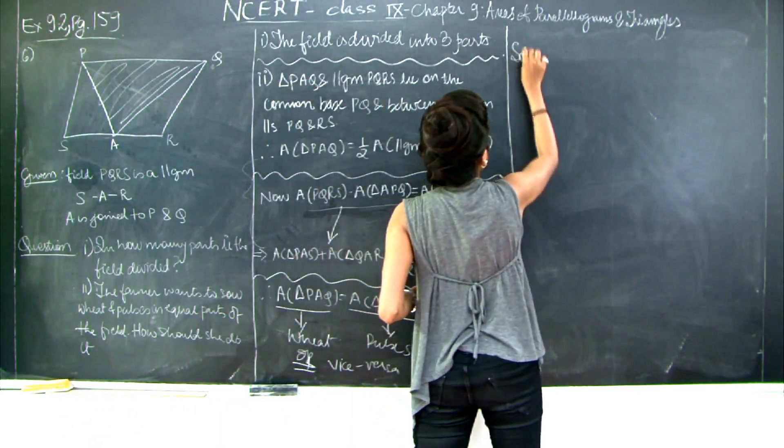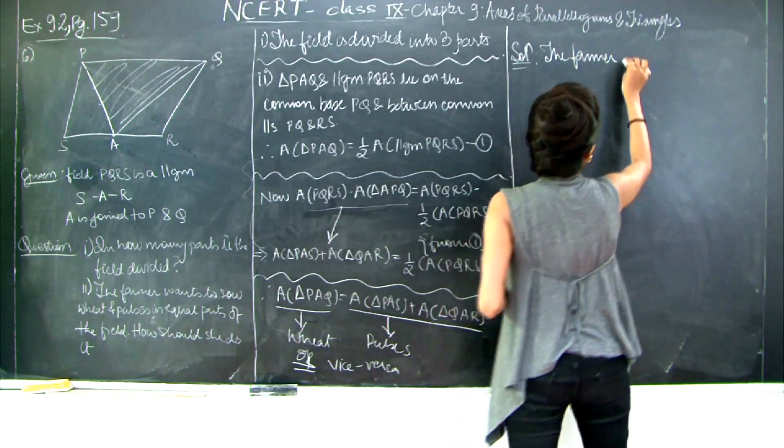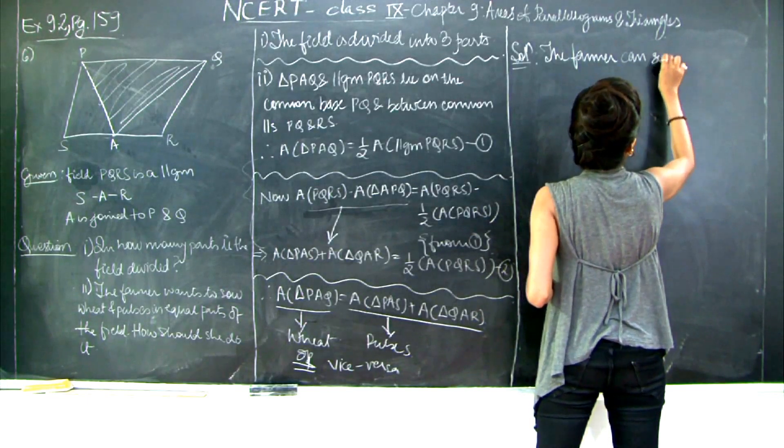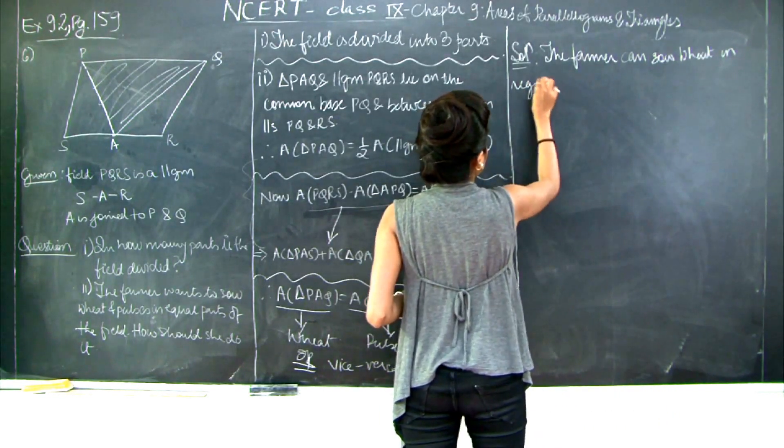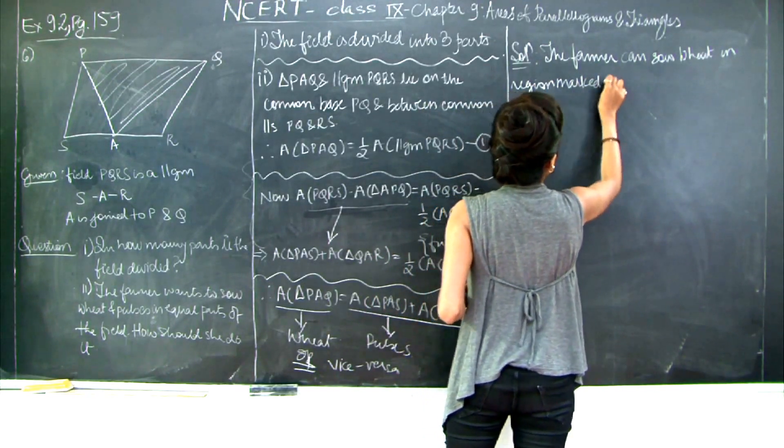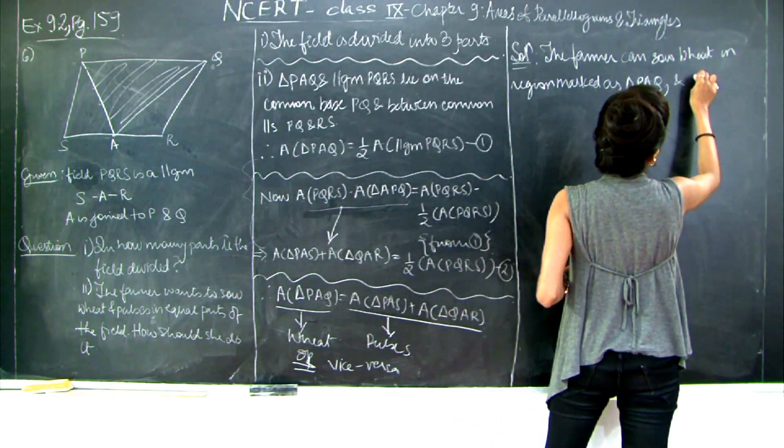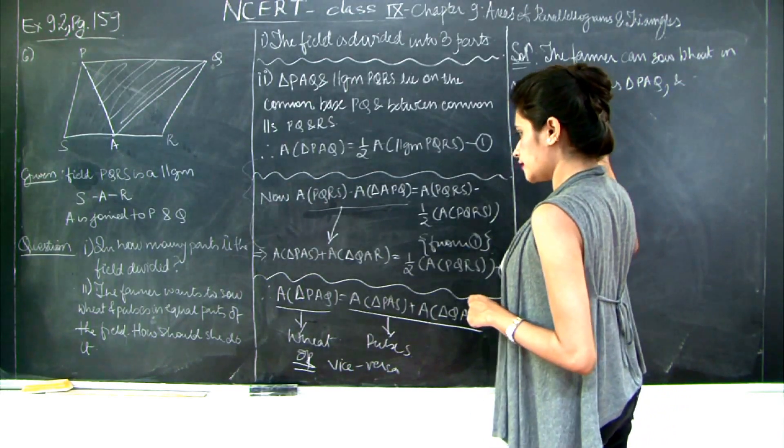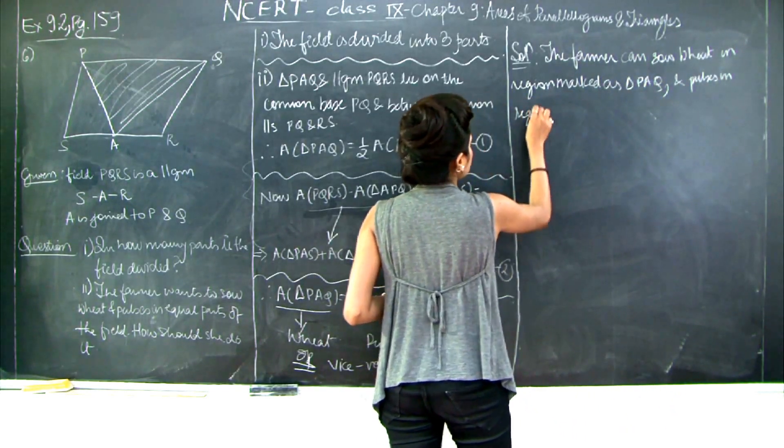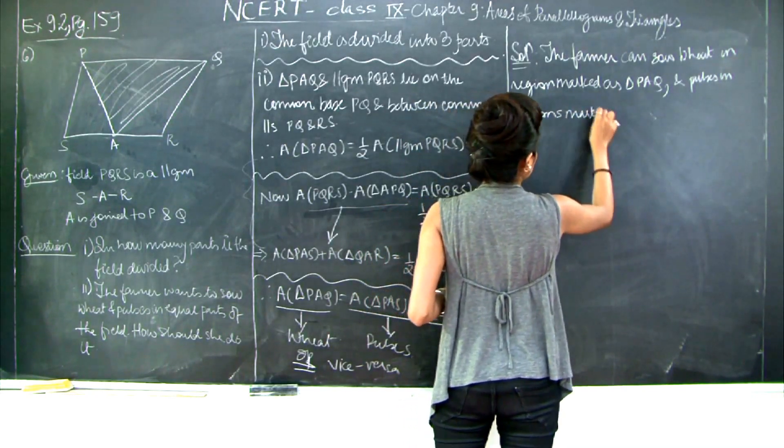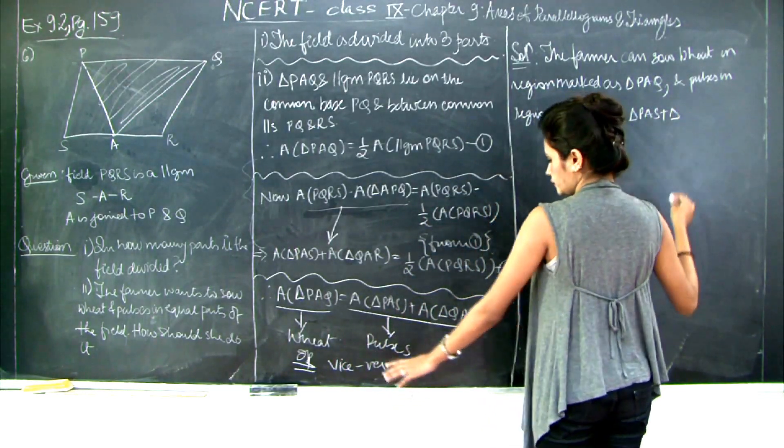Let's write down the answer. Solution: The farmer can sow wheat in region marked as triangle PAQ and pulses in regions marked as triangle PAS plus triangle QAR.